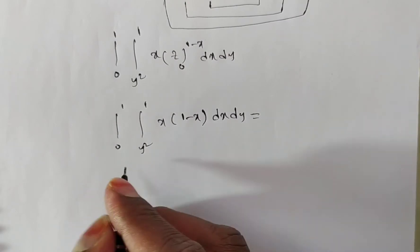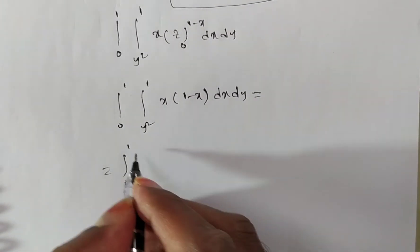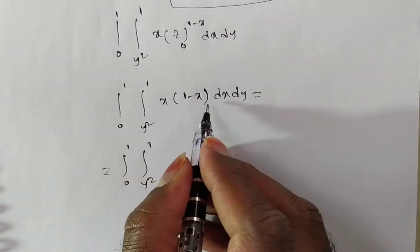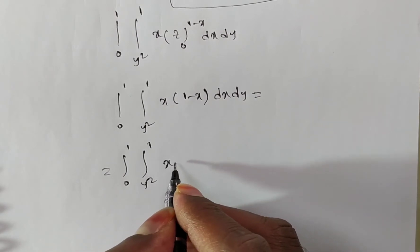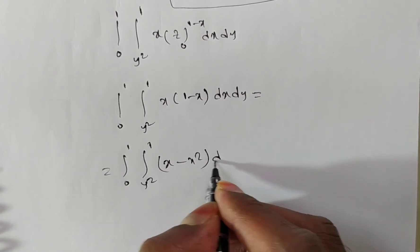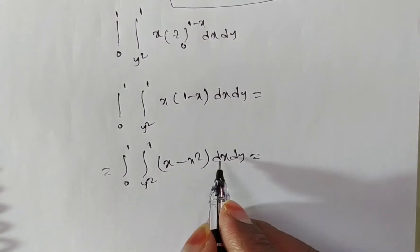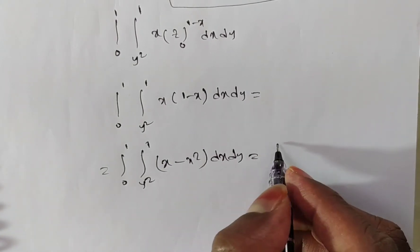So this is equal to, here I am writing integral 0 to 1, integral y square to 1. Multiply inside, x into 1 is x minus x square into dx dy. Now, this is the function of x alone, so integrate with respect to x,